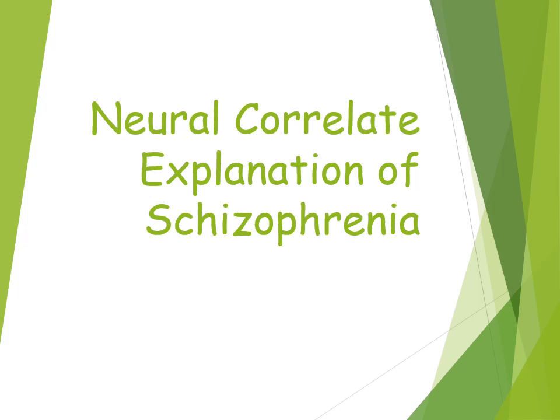In this video we're going to look at the neural correlate explanation of schizophrenia. This is a biological explanation and it's going to look at brain structure as a cause of schizophrenia. The two different brain structures we're going to talk about are the prefrontal cortex and white matter and grey matter within the brain.